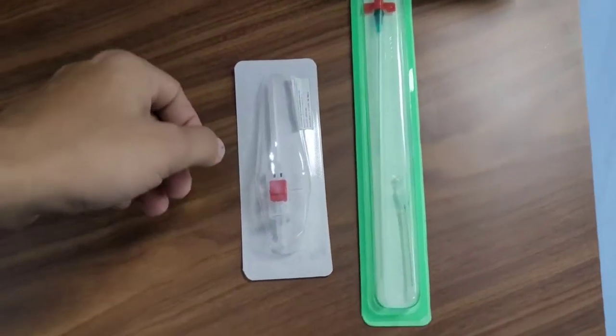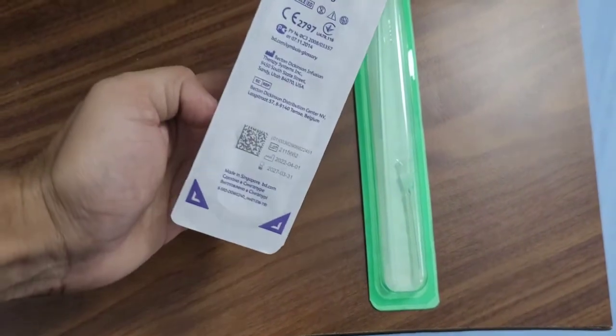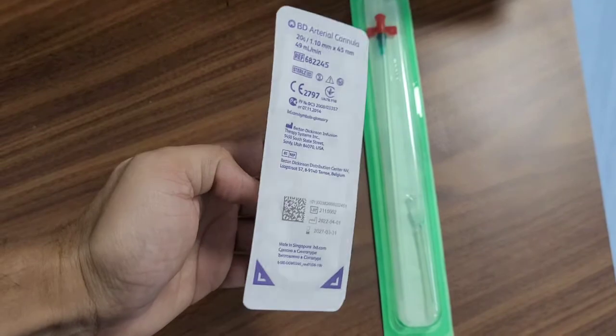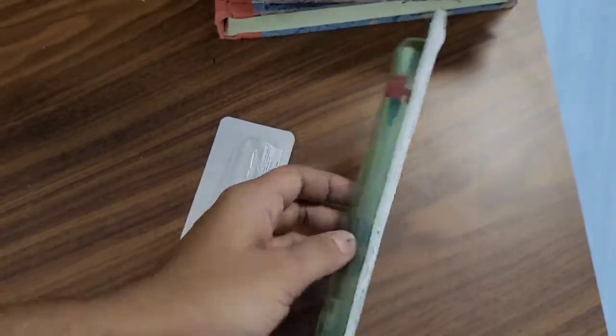These are the arterial cannulas for invasive blood pressure monitoring. This is a BD cannula, 20 gauge, and this is a Leadercath, 22 gauge.